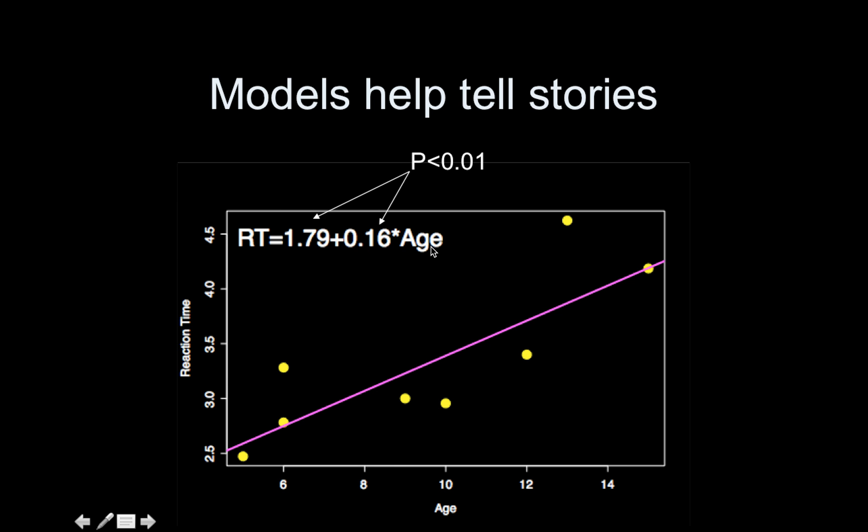And furthermore, we have these things called p-values that we can assign to these estimates that give us further information about how we feel about these parameter estimates. Are they important? Can we conclude that they're different from 0, basically? So that's all coming. This is our goal is to get to all the pieces in this picture here.